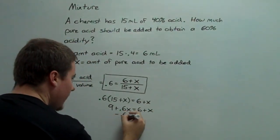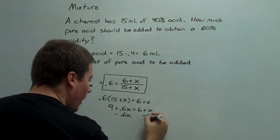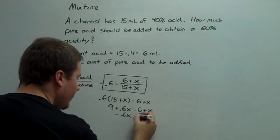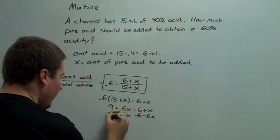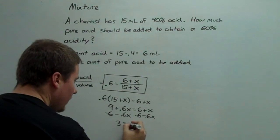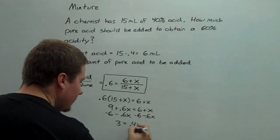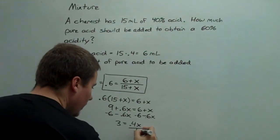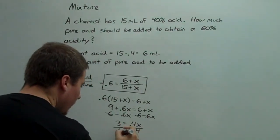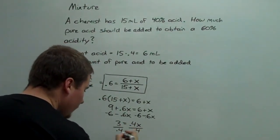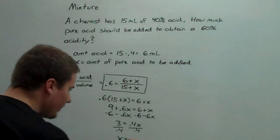So, I subtract 0.6x, and I subtract 6. So, I get 3 equals 0.4x divided by 0.4, and I get x equals 7.5.